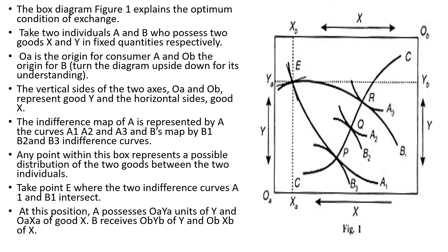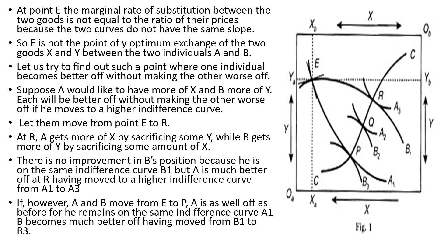Take point E where indifference curves A1 and B1 intersect. At this point, A possesses OA_YA units of Y and OA_XA units of X, while B receives OB_YB of Y and OB_XB of X. At point E, the marginal rates of substitution of the two goods are not equal between the two consumers, so E is not a point of optimum exchange. Let's find a point where one individual becomes better off without making the other worse off. Suppose A would like more of X and B would like more of Y — moving from point E to point R.